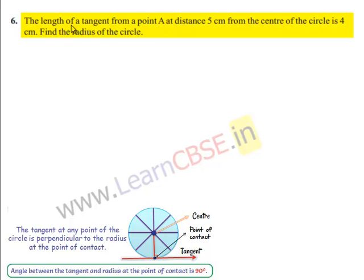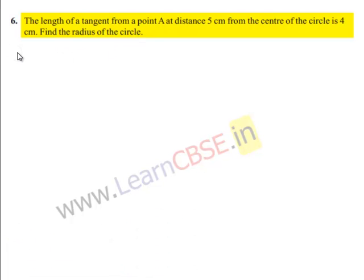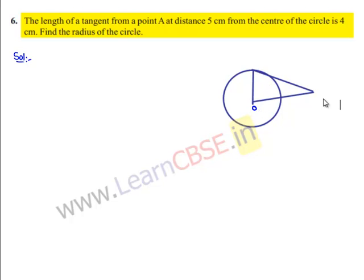Moving on to the sixth question: the length of tangent from a point A at a distance of 5 cm from the center of the circle is 4 cm. Find the radius. Let O be the center and AB be the tangent from A. OA = 5 cm and AB = 4 cm. Let the radius OB = R cm.